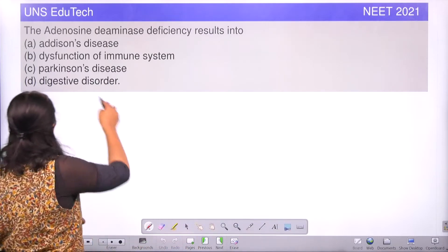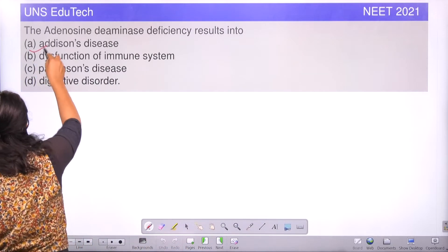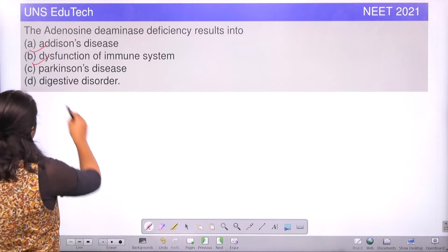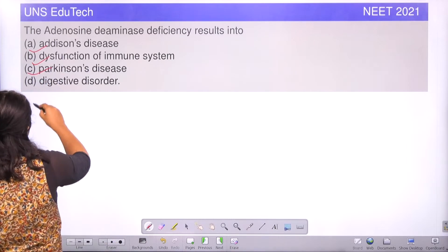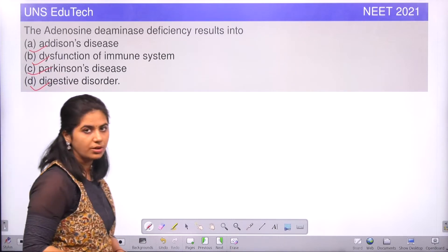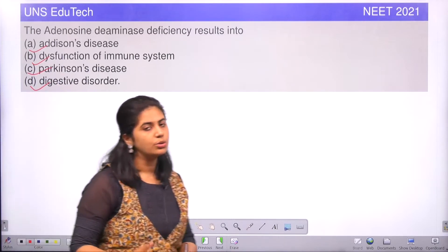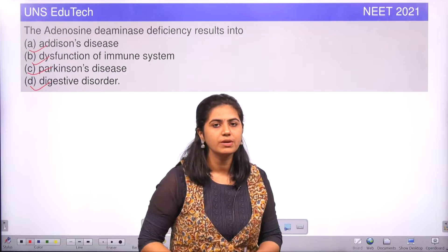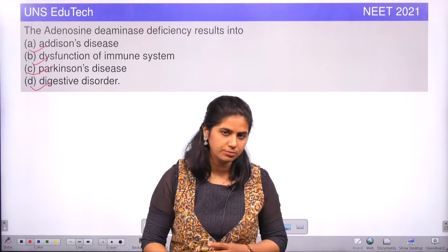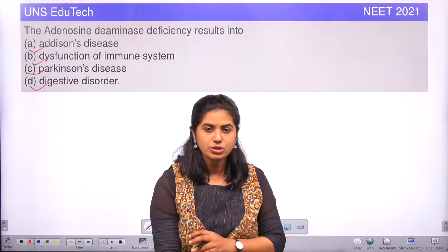The options given are: Addison's disease, dysfunction of the immune system, Parkinson's disease, and digestive disorder. We will go through each and every option and finally arrive at the answer.